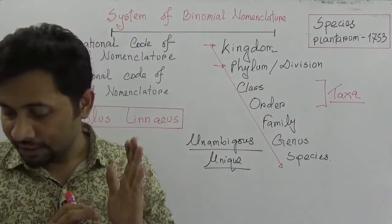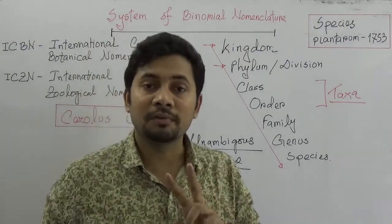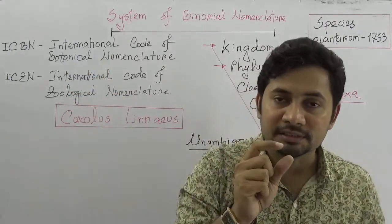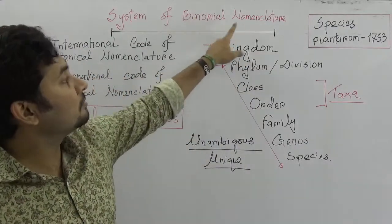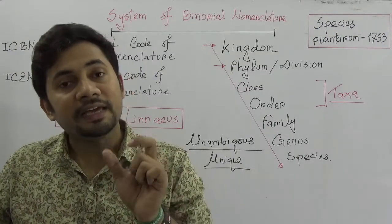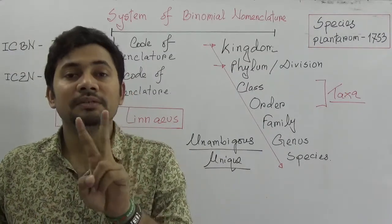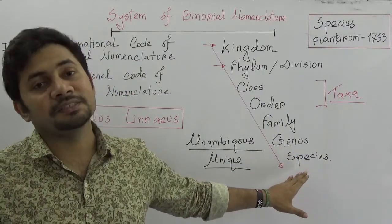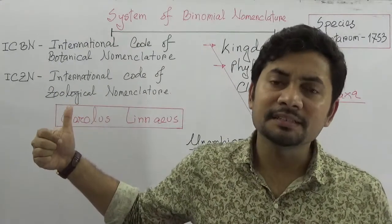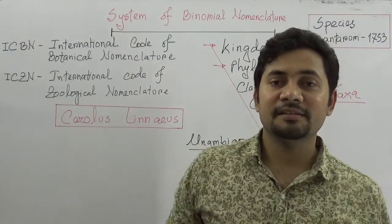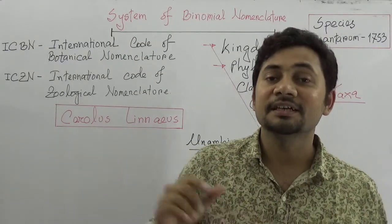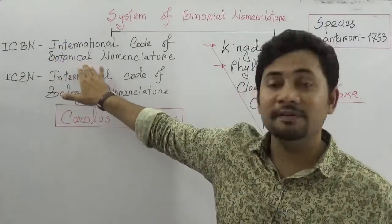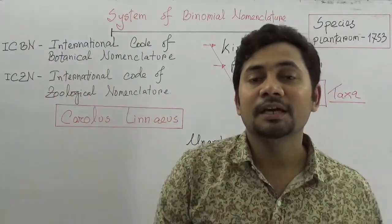Understanding classification requires knowing two more terms: ICBN and ICZN. Binomial nomenclature means naming any living organism using two words — the first part expresses the genus and the second part expresses the species. ICBN stands for the International Code of Botanical Nomenclature, and ICZN stands for the International Code of Zoological Nomenclature, used for plants and animals respectively.